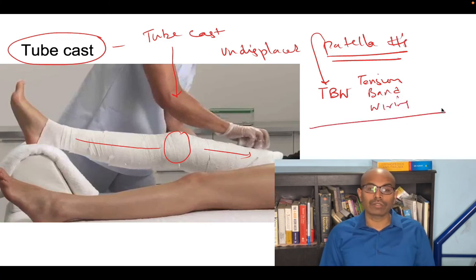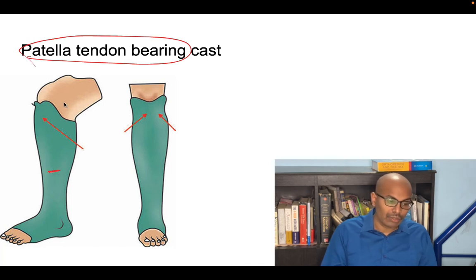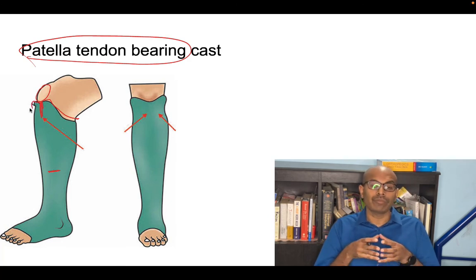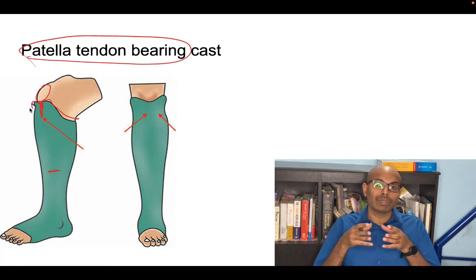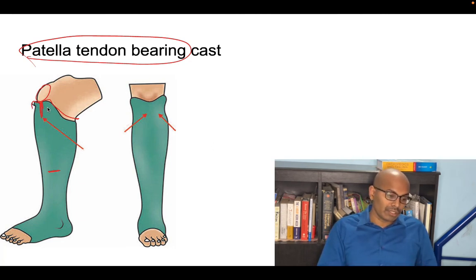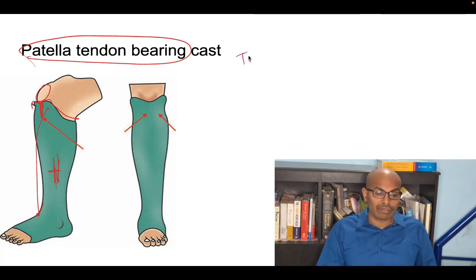The patella tendon bearing cast is used for tibial shaft fractures — specifically undisplaced ones. The cast extends up to the patella tendon level, allowing the body's weight to pass through the cast rather than through the tibia bone. This allows the patient to remain mobile while the fracture heals.